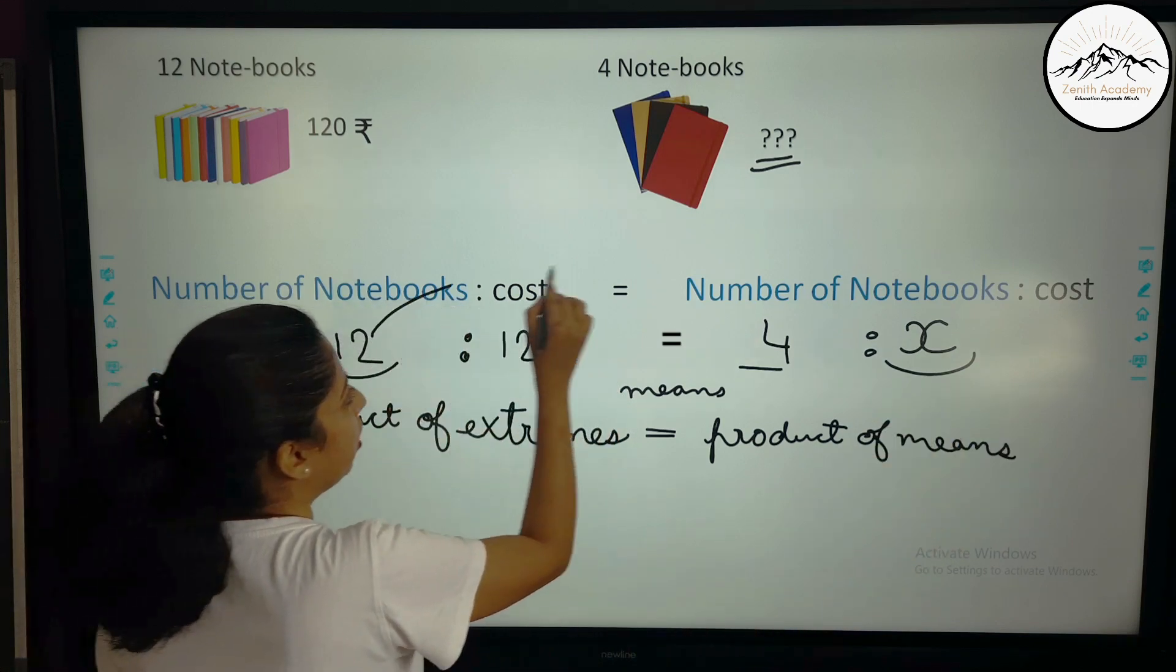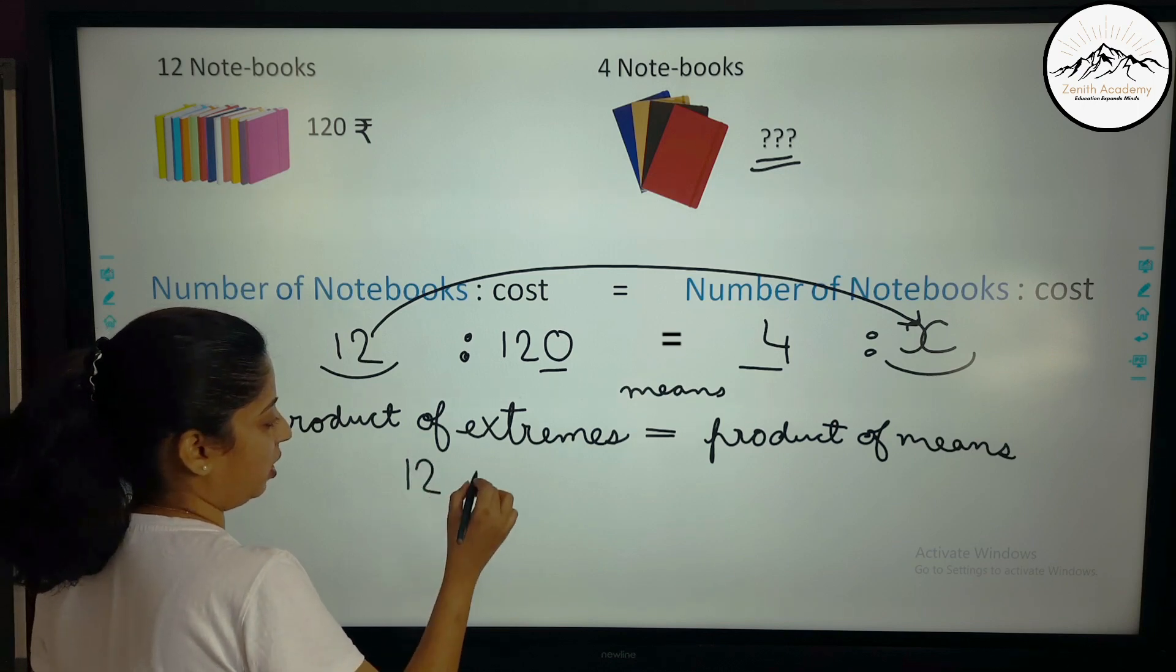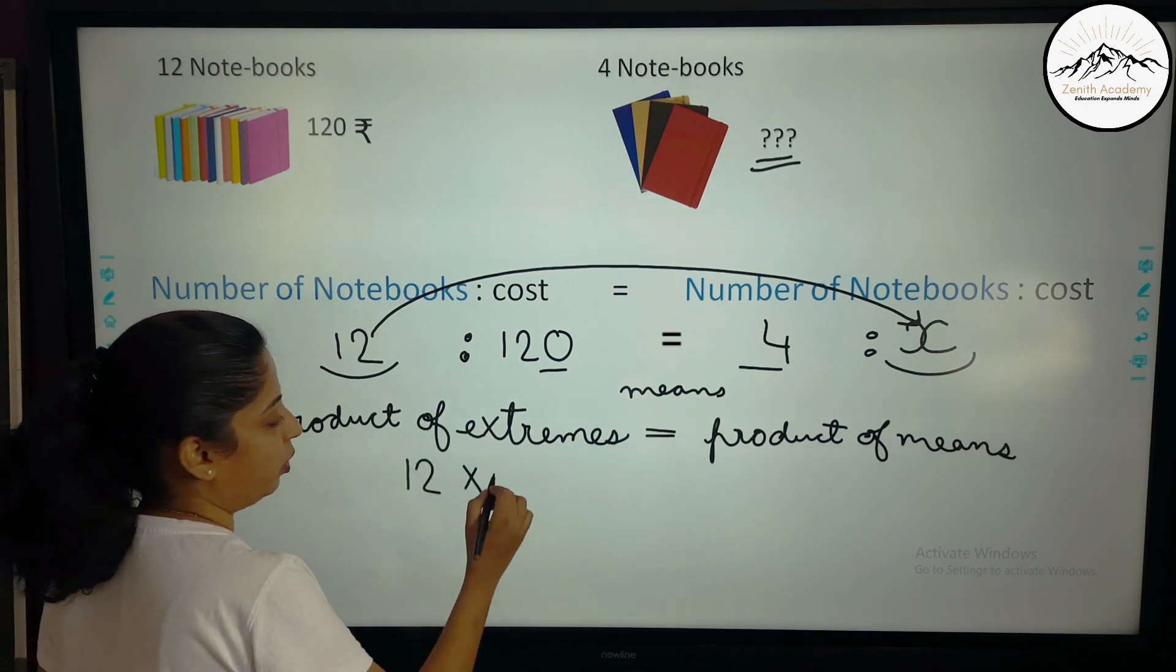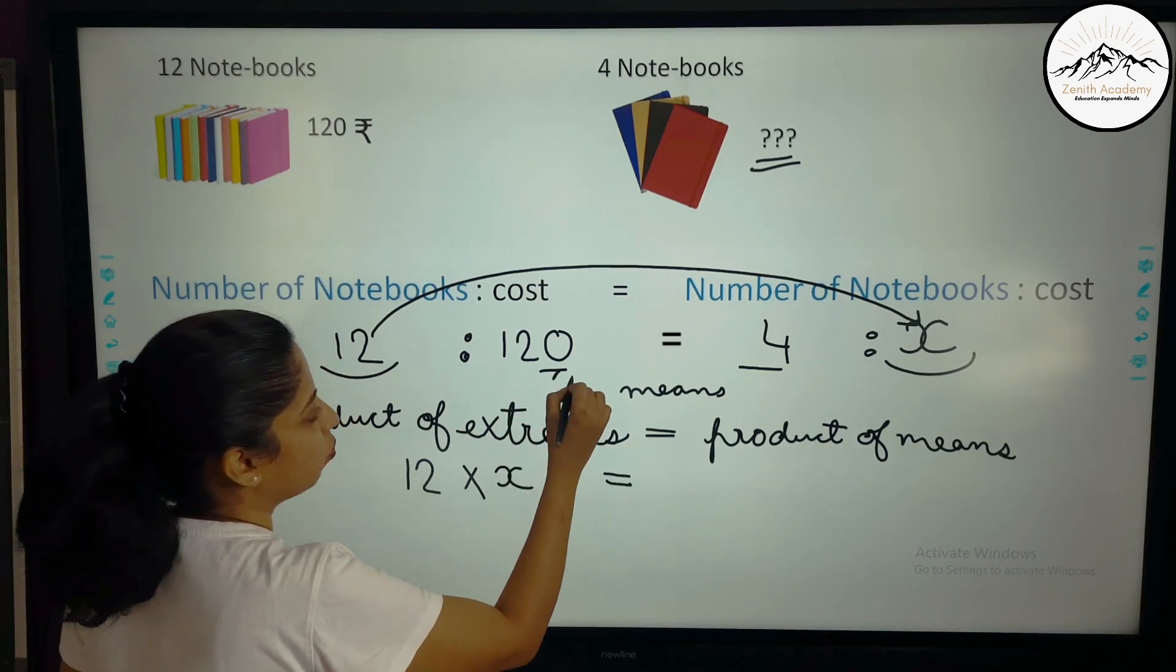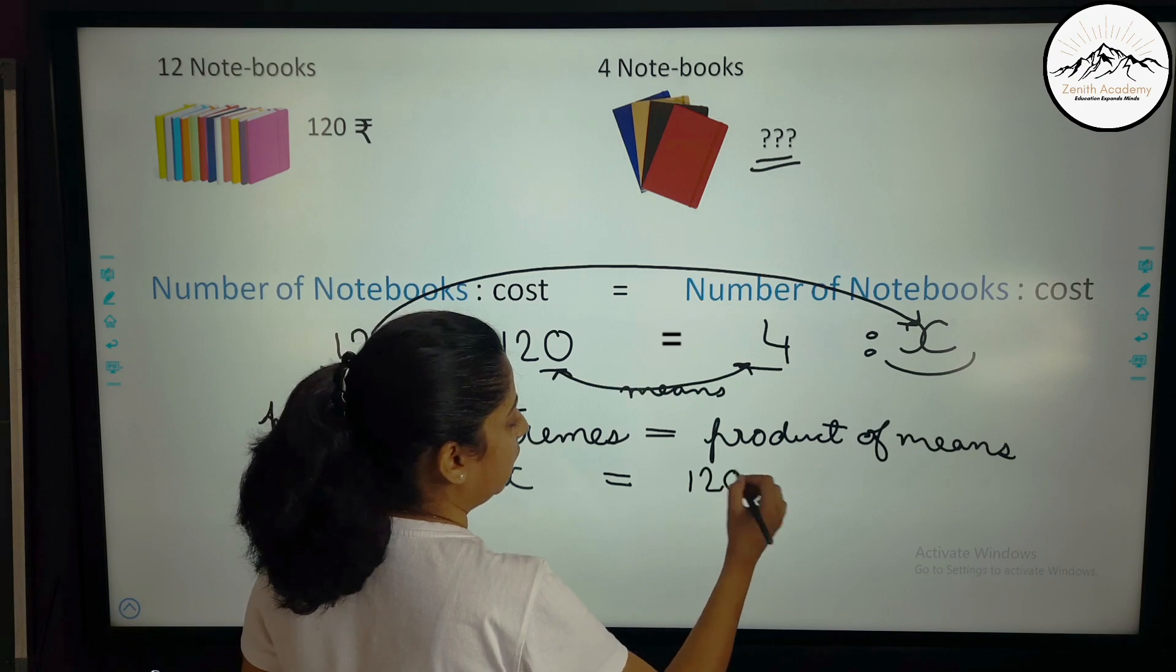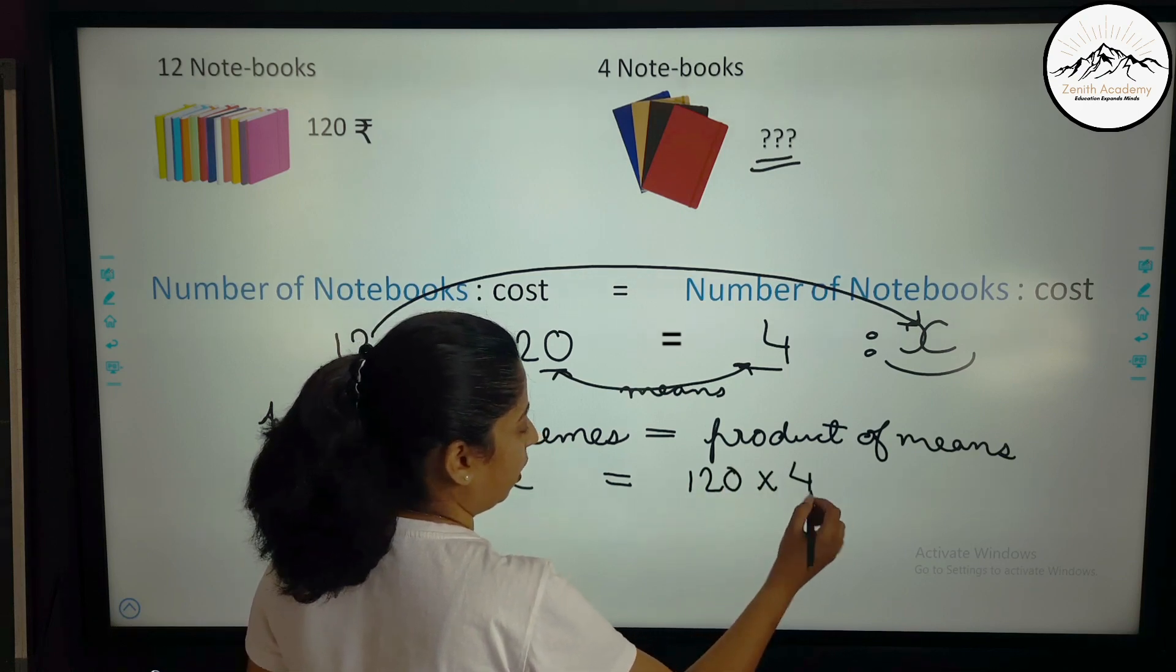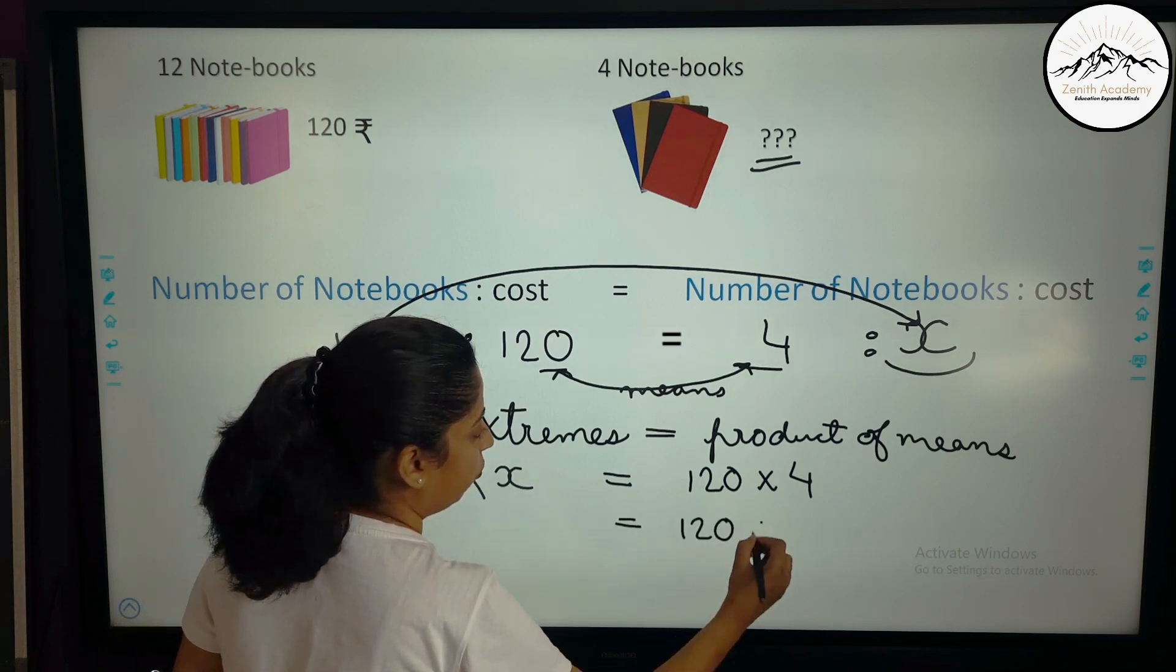Product of extremes is equal to product of means. Now what are extremes? This 12 and x are extreme. So we can say the product that is multiplication. 12 into x is equal to product of means. This 120 and 4 are means. So it is 120 into 4.